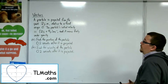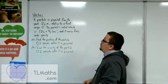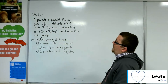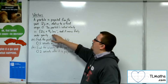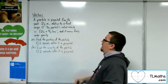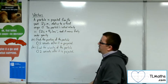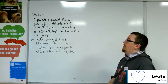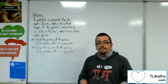Let's say we've got a particle projected from the point 2j metres relative to a fixed origin O. The particle's initial velocity is 2i plus 9j metres per second, and it moves freely under gravity. First of all, find the position of the particle 0.2 seconds after it is projected.